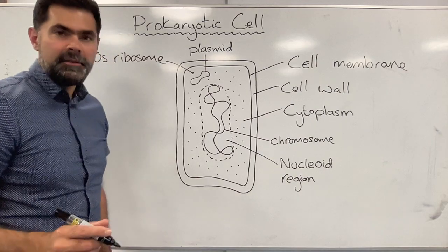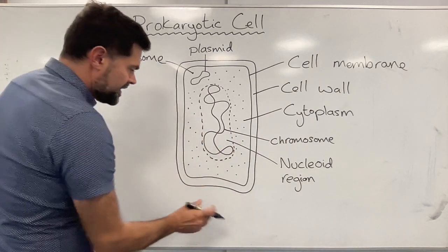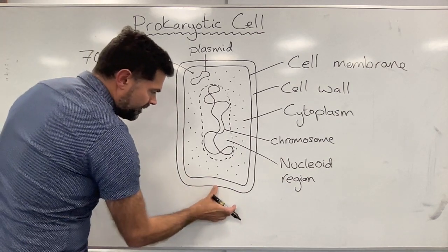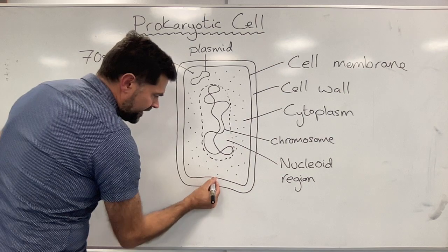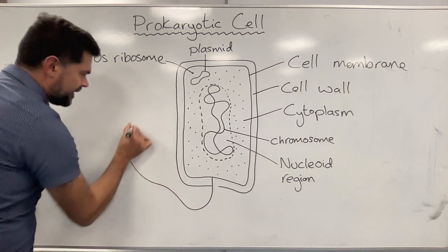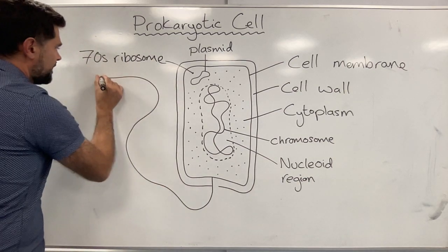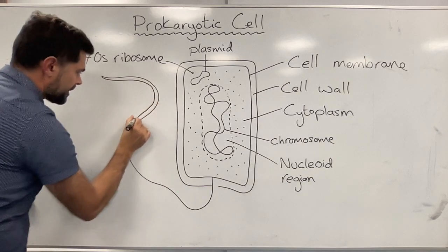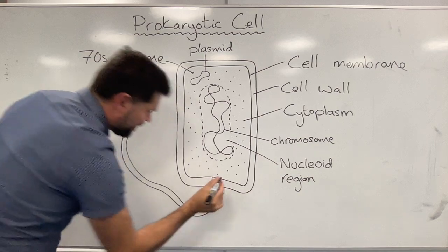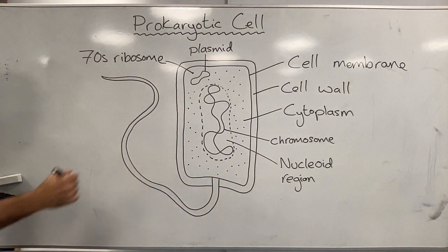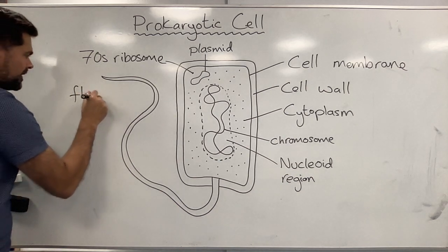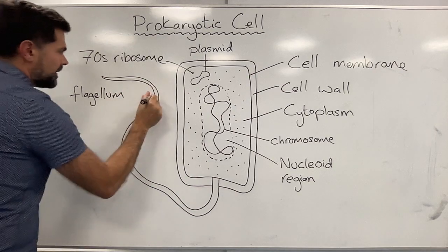Some bacteria will also have a long tail-like structure called a flagellum. Some of them have many flagella. I'm just going to draw one flagellum. The flagella starts off connected to the cell membrane like this. It's a long tail-like structure. It goes through the cell wall and connects to the cell membrane there.